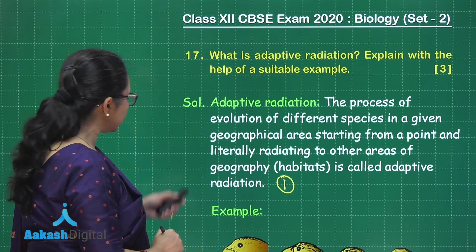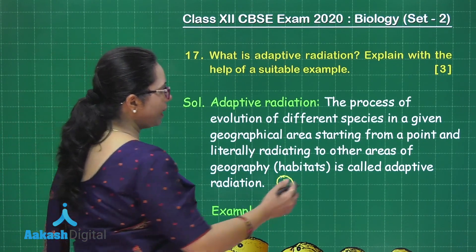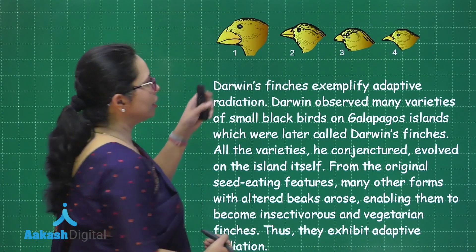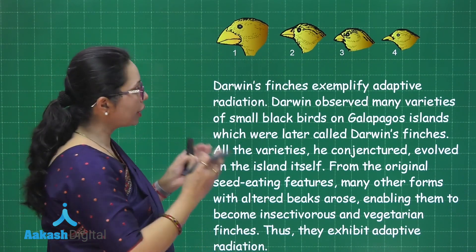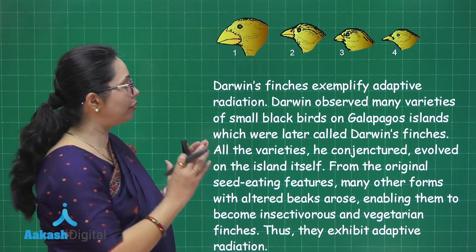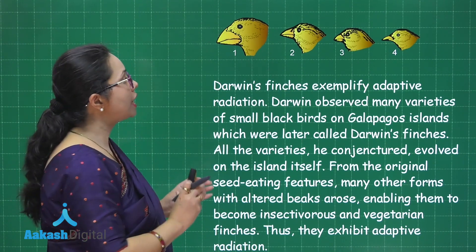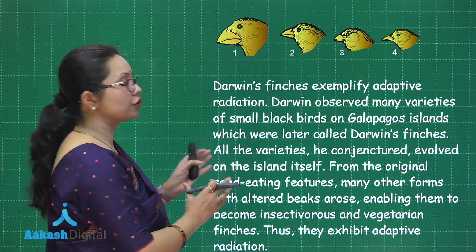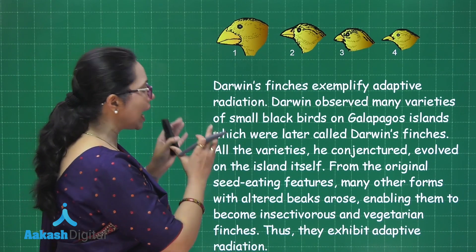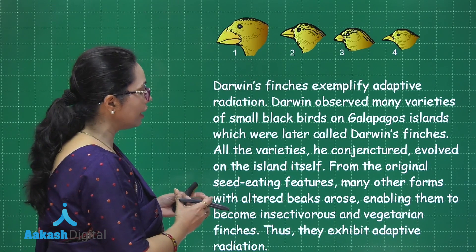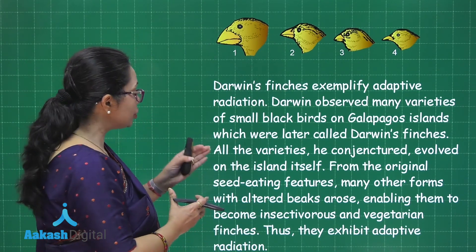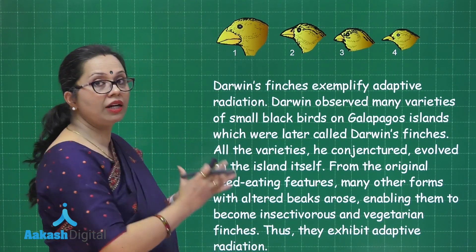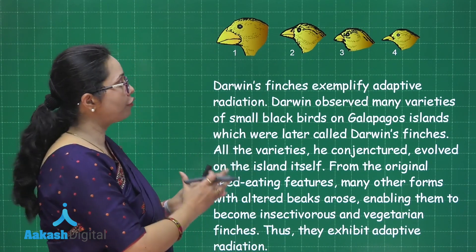The second part of the question requires an example of adaptive radiation. The best example is Darwin's finches. Darwin observed these finches when he visited the Galapagos Islands. He found many different types of small birds and concluded they must have evolved from a common ancestor — the original finch was a seed-eating ground finch. From that finch, a number of new species developed, including insectivores, vegetarian tree finches, and even cactus finches. When resources are limited and vacant habitats are available, new species can arise from the ancestral form.